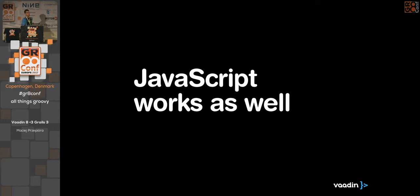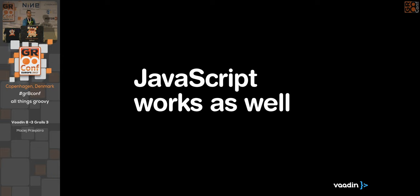Pure JavaScript works as well and has worked since Vaadin 6 — you could just create a component with JavaScript, but it's not the common way. At least some time ago, Java tooling was way better than JavaScript tooling — linters, static checkers, and so on. This is getting better and better, so that's why we're making GWT optional in the next release of Vaadin. You can also use GrooScript, a compiler from Groovy to JavaScript, to develop client-side parts of Vaadin components.